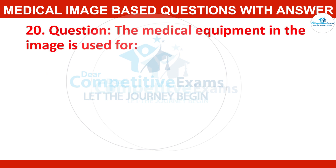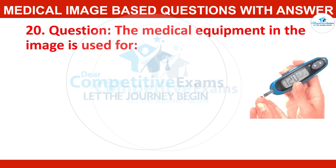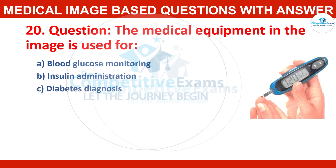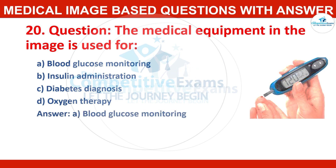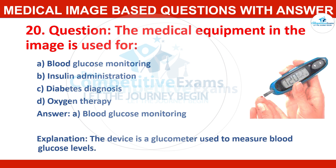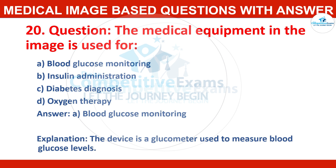Question number twenty: the medical equipment in the image is used for — options: blood glucose monitoring, insulin administration, diabetes diagnosis, or oxygen therapy? Correct answer: blood glucose monitoring. The device is a glucometer used to measure blood glucose levels.